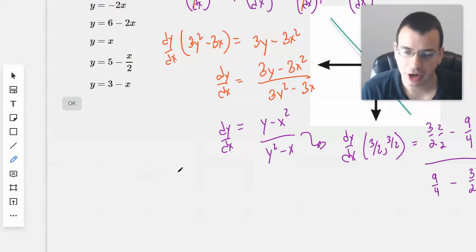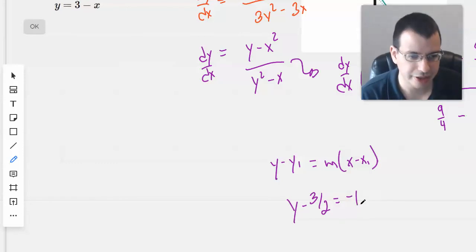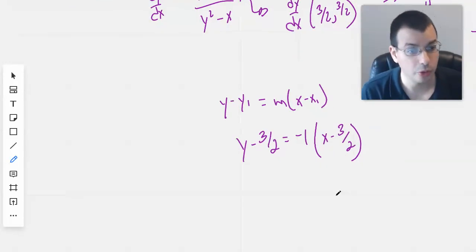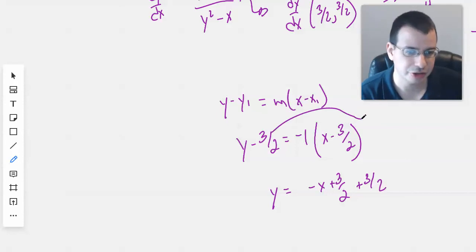Okay, so now throw it all into the formula. We have y minus y1 equals m, x minus x1. Y minus our point is 3 halves equals negative 1, x minus 3 halves, because x and y are both 3 halves. And we have y equals negative x plus 3 halves plus 3 halves. So the second 3 halves is the 3 halves I moved over there.